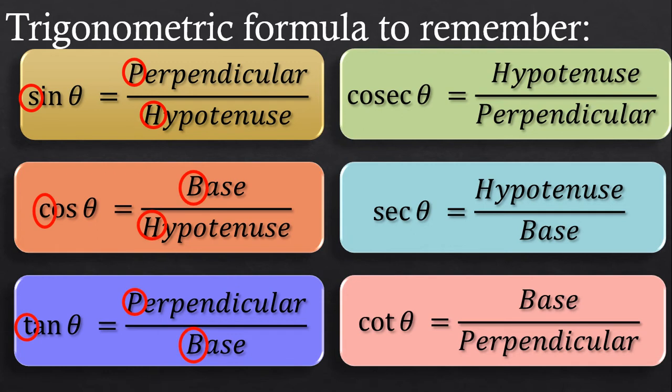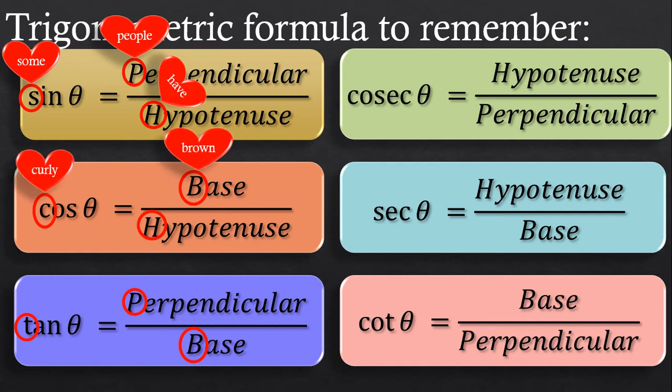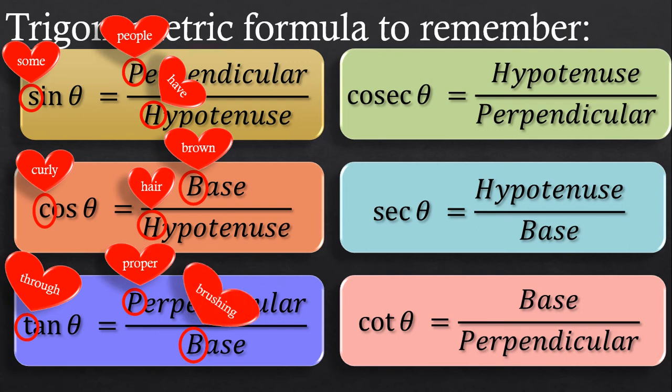So I will tell you how I remembered it: Some people have curly brown hair through proper brushing. There is a variety of other mnemonics that you can find on Google for remembering these formulas so you can choose whatever works best for you. And yeah, I put them in hearts because mnemonics makes our hearts happy by making things easy for us, right?